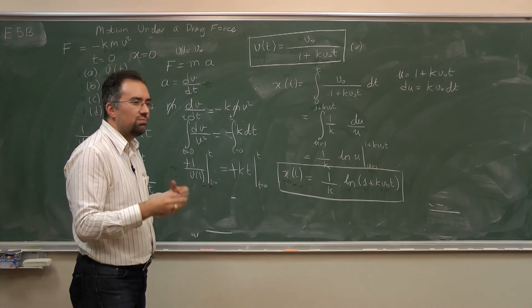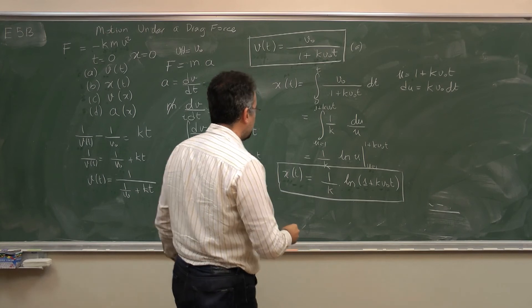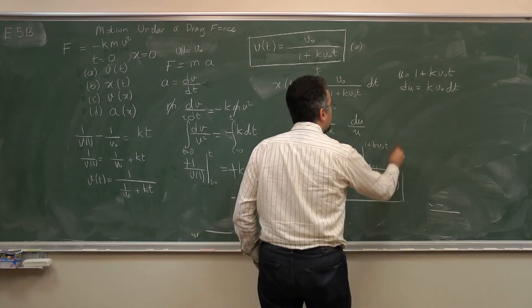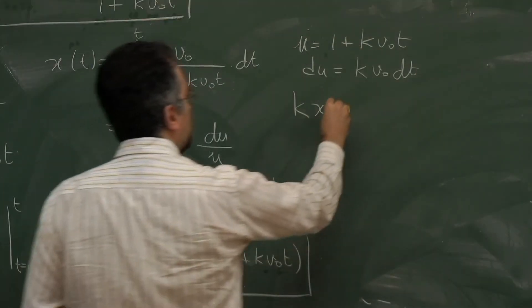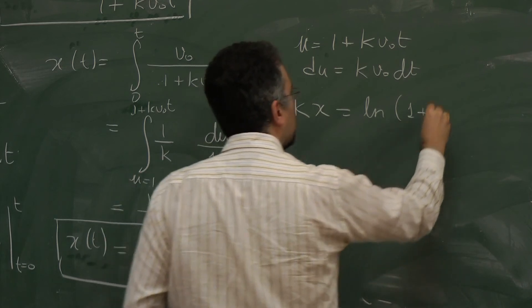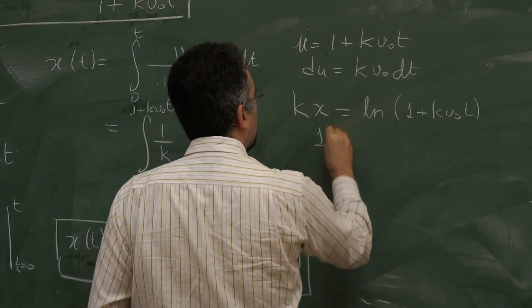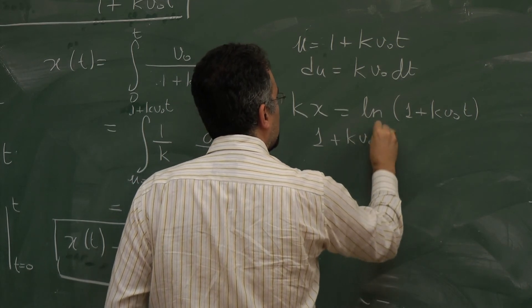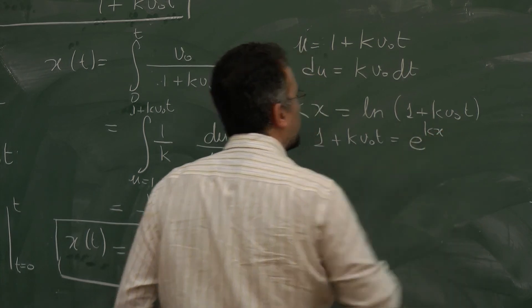You can try pulling out t exactly and it will still work, but you will do the additional work of just moving things around. Not very useful. So essentially I have, if I move things in that equation around, I have kx equals ln (1 plus k v0 t), which gives 1 plus k v0 t equals e to the power kx.